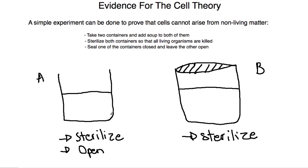And so what happens is we'll discover that in container A mold starts to grow after a certain period of time. But no mold grows in container B.